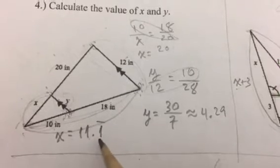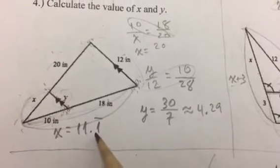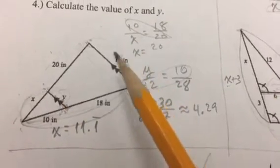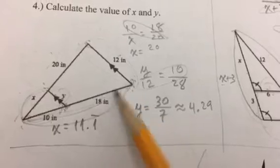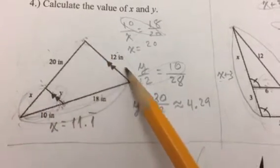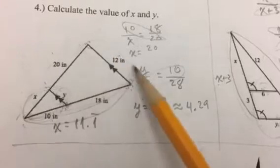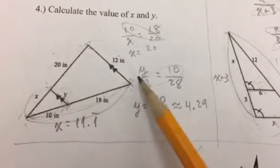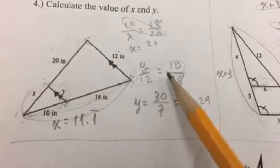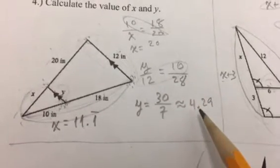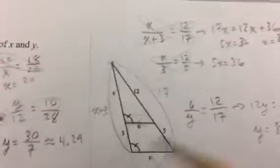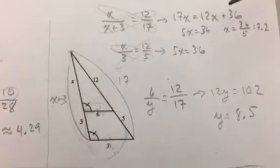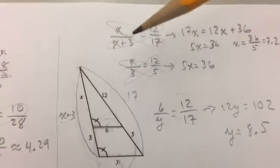To find y, I said y over 12 is equal to 10 over 28. That's matching a pair of whole sides. Y is a whole side, 12 is a whole side, 10 is a whole side of the small one, and 28 is the whole side of the big one. So that's matching up whole sides together and you end up with about 4.29.